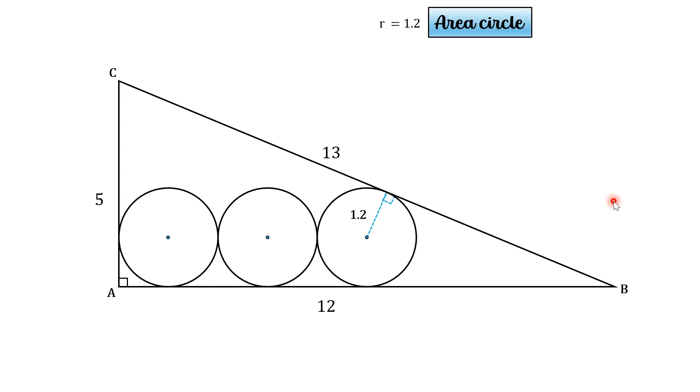Now that we know the radius of the circle, we can go ahead and calculate its area using the formula pi r squared. So substitute R into that, so 1.2 squared is 1.44, so the area of the circle is 1.44 pi.